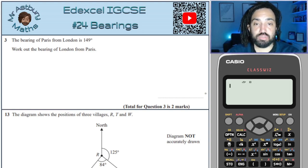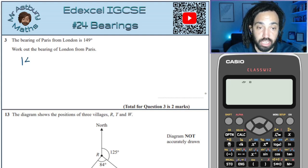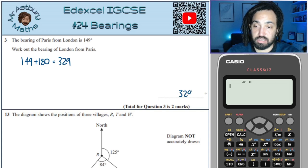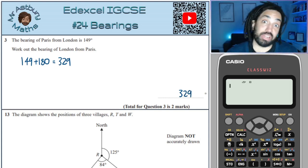The bearing of Paris from London is 149°. Work out the bearing of London from Paris. Well, straight away I could work that out just by adding 180 degrees, and that will give me 329. So that is the answer, but obviously I'm going to explain it a little bit better than that.